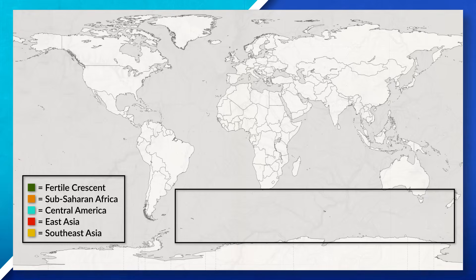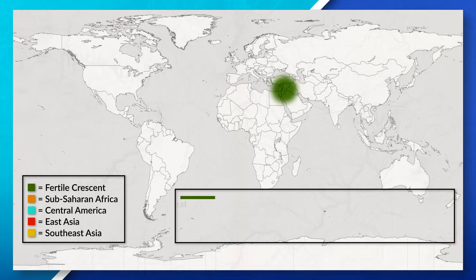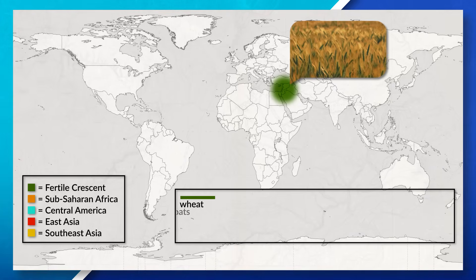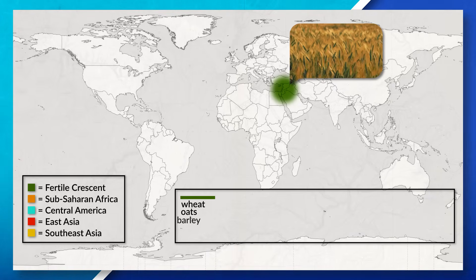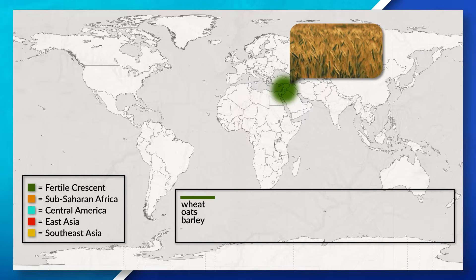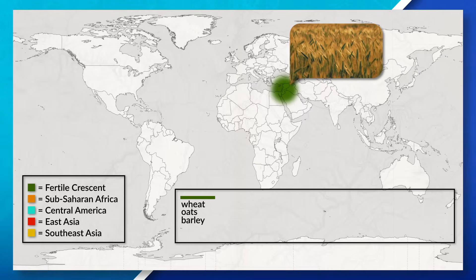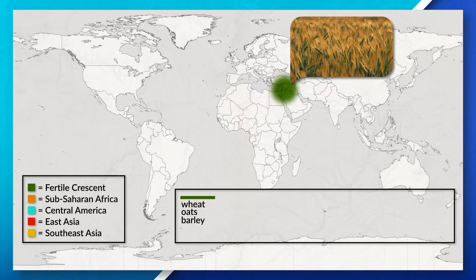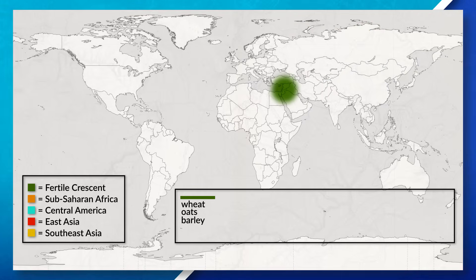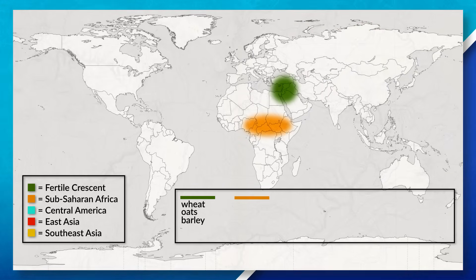Now, the Fertile Crescent is also one of our five agricultural hearths. Some crops that originated here are wheat, oats, and barley, which over time diffused through the Middle East, Europe, and parts of Africa. If we move west from this region and over to Sub-Saharan Africa, we will see yams, coffee, and sorghum cultivated, which first started to diffuse down through Southern Africa.